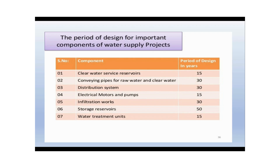Design periods for water supply components: clear water service reservoir — 15 years; conveying pipes for raw water and clear water — 30 years; distribution system — 30 years; electrical motors and pumps — 15 years; infiltration works — 13 years; storage reservoir — 15 years; water treatment unit — 15 years.